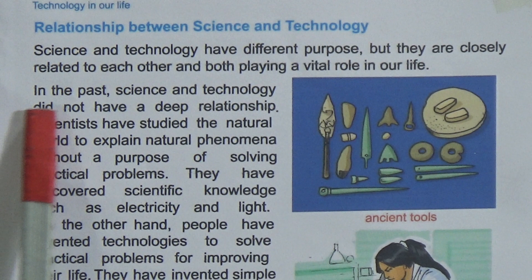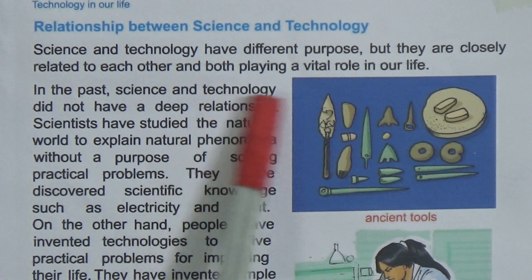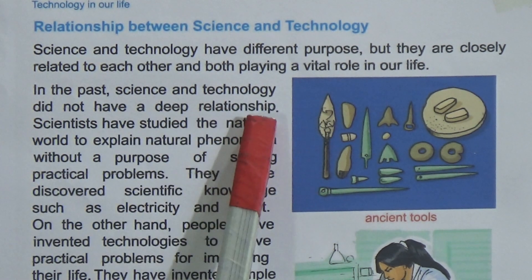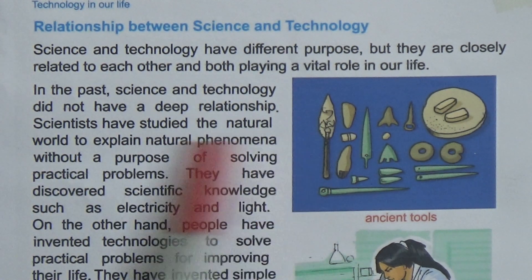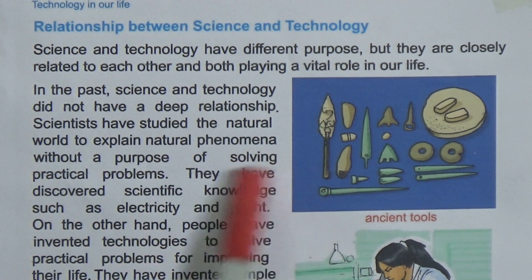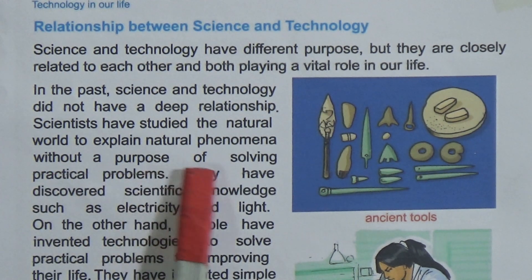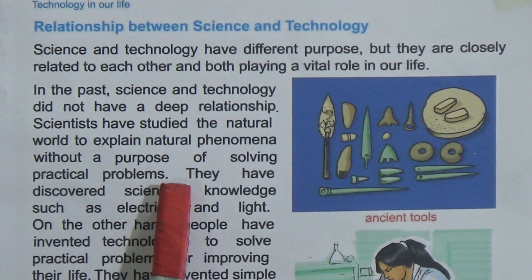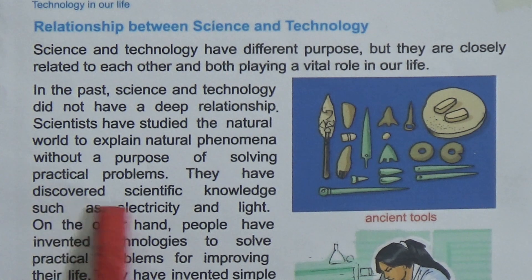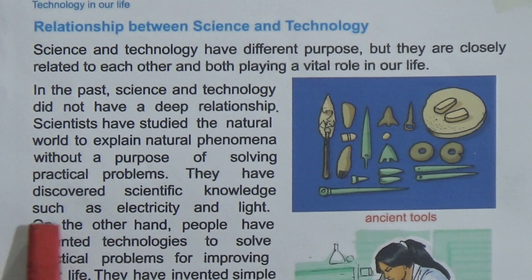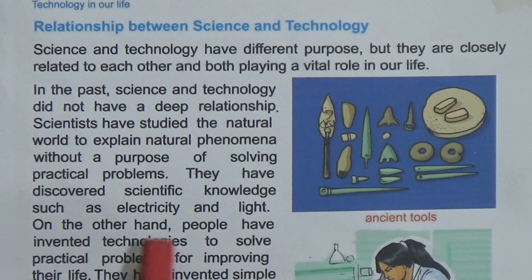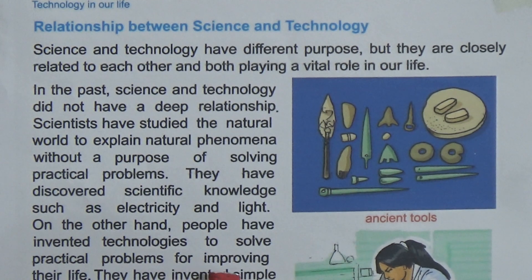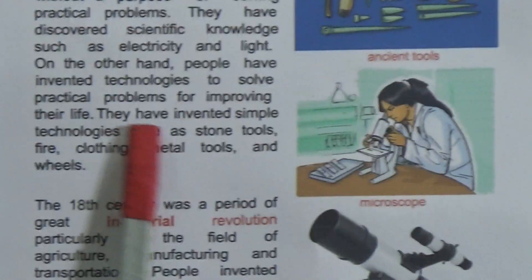In the past, science and technology did not have a deep relationship. Scientists studied the natural world to explain natural phenomena without the purpose of solving a particular problem. They discovered scientific knowledge such as electricity and light. On the other hand, people invented technology to solve practical problems for improving their lives.